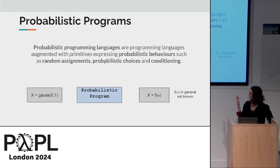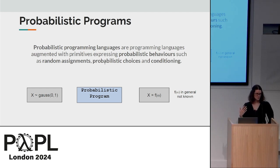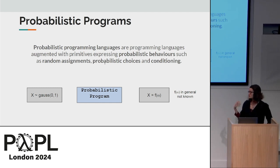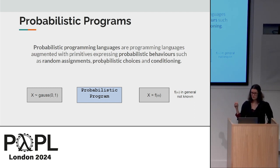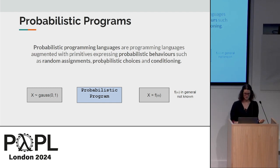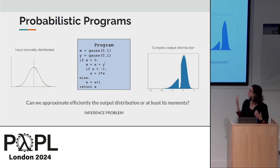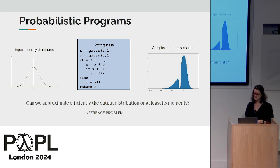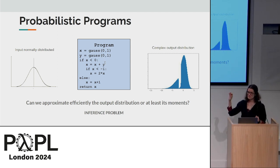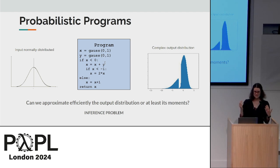In our paper, we take the point of view of seeing a probabilistic program as a transformer on distributions. You can imagine having a prior or input distribution on your variables — for example, a standard Gaussian distribution — and your probabilistic program acts on that distribution to transform it, so that at the end of execution you have a different distribution on your variables, which we call the posterior or output distribution. It's described by a probability density function f, which is highly non-trivial to compute. Even starting from a very simple toy example — just 10 lines of code and simple independent standard Gaussians — we get a complex output distribution, where writing the PDF is non-trivial.